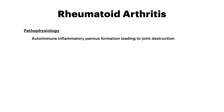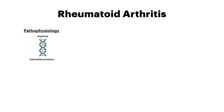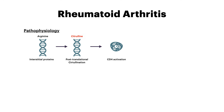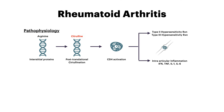In every joint, you have an interstitium with interstitial proteins that normally carry out individual functions. Under normal circumstances, these proteins have arginine on them. But in rheumatoid arthritis, there's post-translational citrullination — a fancy way of saying arginine gets swapped out for citrulline. The body recognizes these citrullinated proteins as foreign and triggers inflammation. CD4 cells become activated, kicking off type 2 and type 3 hypersensitivity reactions and recruiting inflammatory factors like interferon, tumor necrosis factor, IL-1, and IL-6.